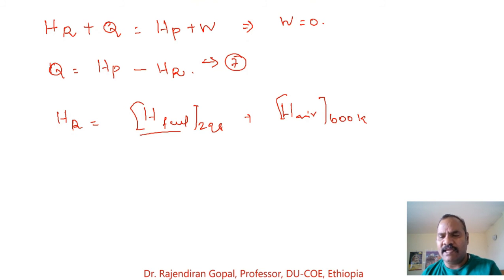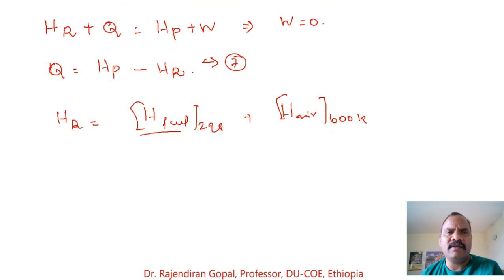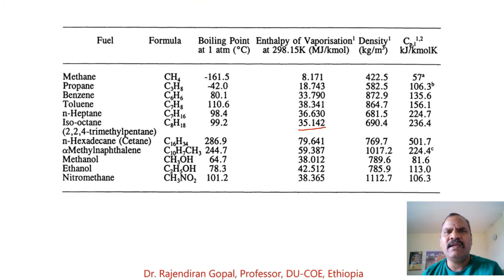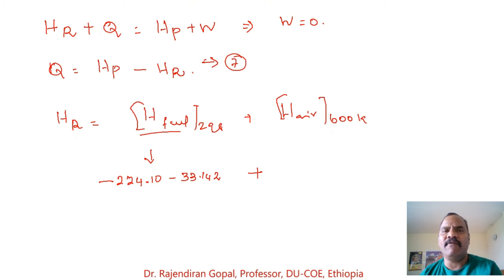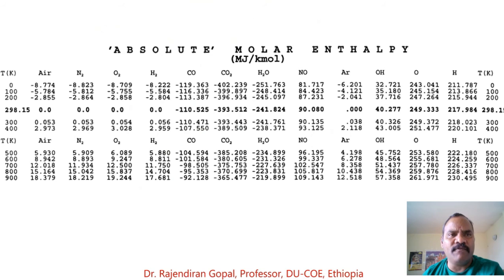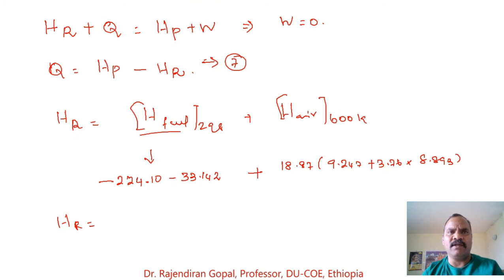The enthalpy of the reactants equals the enthalpy of fuel C8H18 at 298 K plus the enthalpy of air at 600 K. From tables, the enthalpy of formation of C8H18 liquid is −224,100 kJ/kmol, and since the fuel is liquid at 15 bar, we subtract the enthalpy of vaporization: −224,100 − 33,142 kJ/kmol. Adding the enthalpy of air (18.77 kmol: O2 at 9247 + 3.76 × N2 at 8893 kJ/kmol), the total enthalpy of reactants equals 541.99 MJ/kmol of fuel.